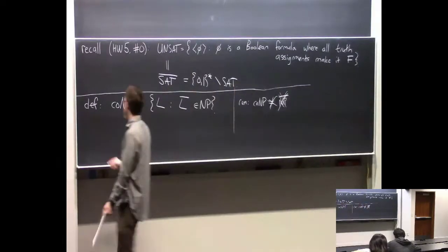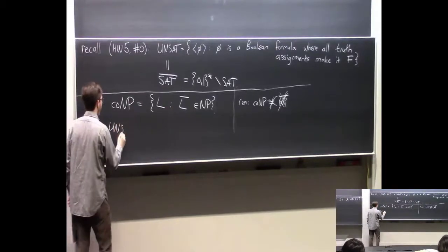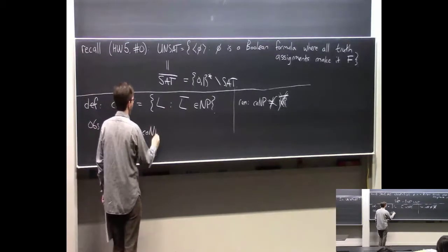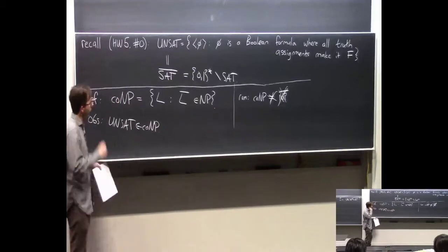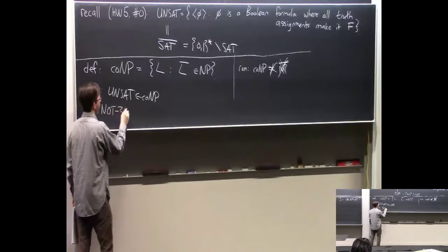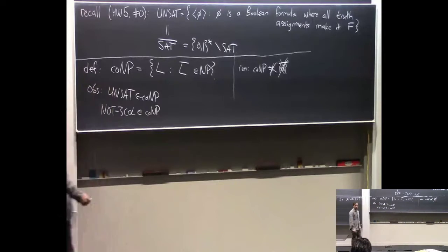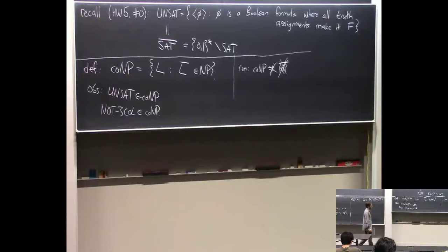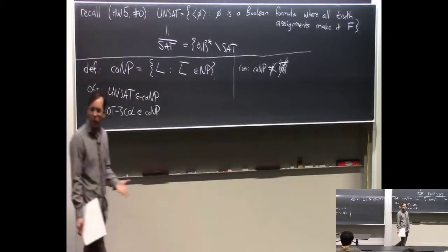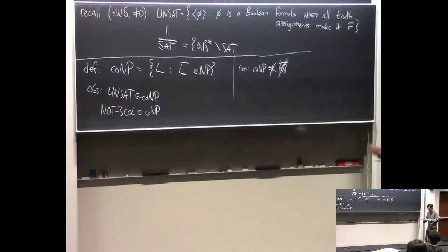Straight from the definition, the UNSAT problem is in co-NP. Also, for example, the not-three-colorable problem is in co-NP—given a graph, you want to know if it cannot be legally colored with three colors. Or the no-Hamiltonian-path problem is in co-NP. It looks like we're just making trivial observations, but let's roll with it. The interesting question is: UNSAT is in co-NP, but is it also in NP?